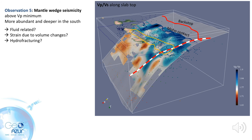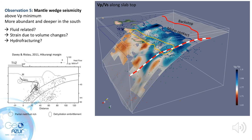We can certainly speculate that this seismicity is fluid related, but it is not associated with a large increase in Vp/Vs ratio. Other scientists found evidence for mantle wedge seismicity in the Hikurangi margin and associated this seismicity with the 700 degrees isotherm, concluding that the seismicity must be related to a phase transition. In the case of the Lesser Antilles, however, the seismicity is diffuse, therefore the mechanism to explain it might be different.